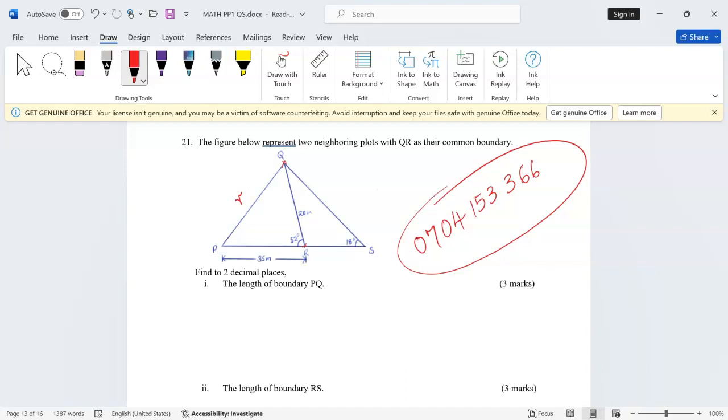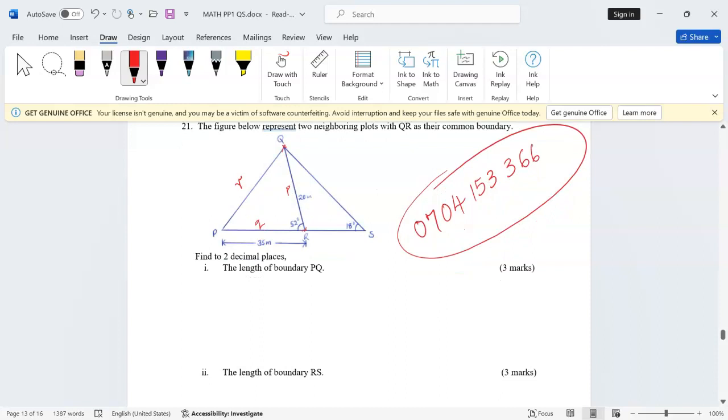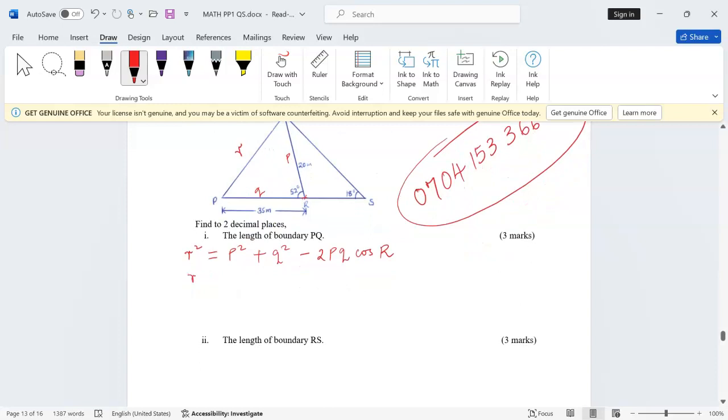We know very well that according to triangle PQR, the length which is opposite P will be called small letter p, the length opposite to Q will be called small letter q. According to the cosine rule, length r squared is the same as p squared plus q squared minus 2 multiplied by p multiplied by q times the cosine of the angle at R.